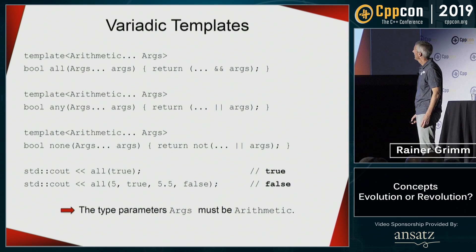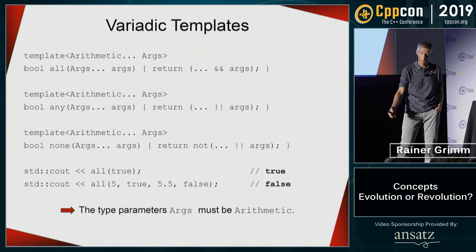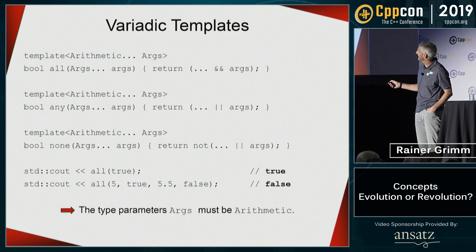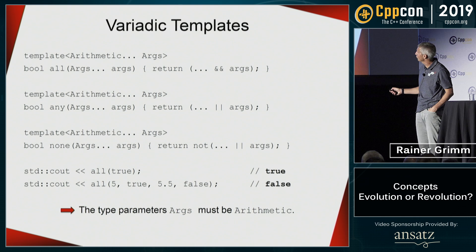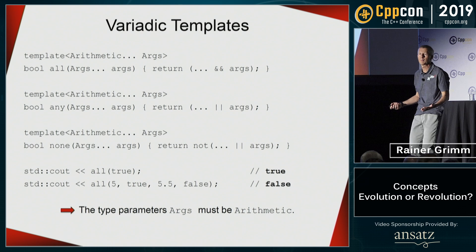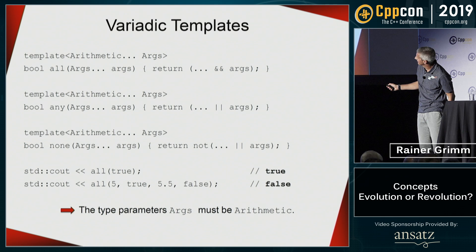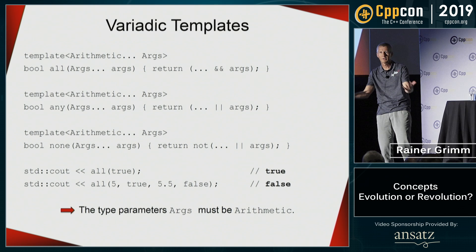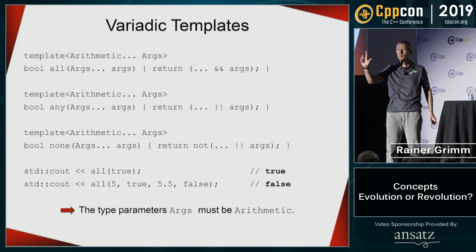Here's a more sophisticated example using C++17 fold expressions. I implemented all, any, and none: all returns true when all arguments are true, any when any argument is true, none when none are true. The key point is I used the concept arithmetic to express my requirement — arithmetic means the type should be integral or floating point.